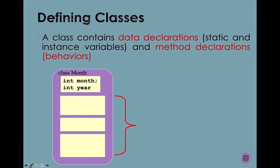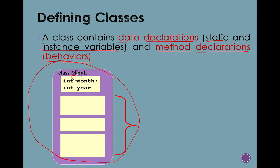Our class should contain first, data declarations and also method declarations. When we say data declarations, it's either a static or an instance variable. Method declarations are the behaviors of our program or our code. As you can see in this illustration, we have class name 'Month', which includes two data declarations: int month and int year. The three boxes here are actually intended for the method declarations.